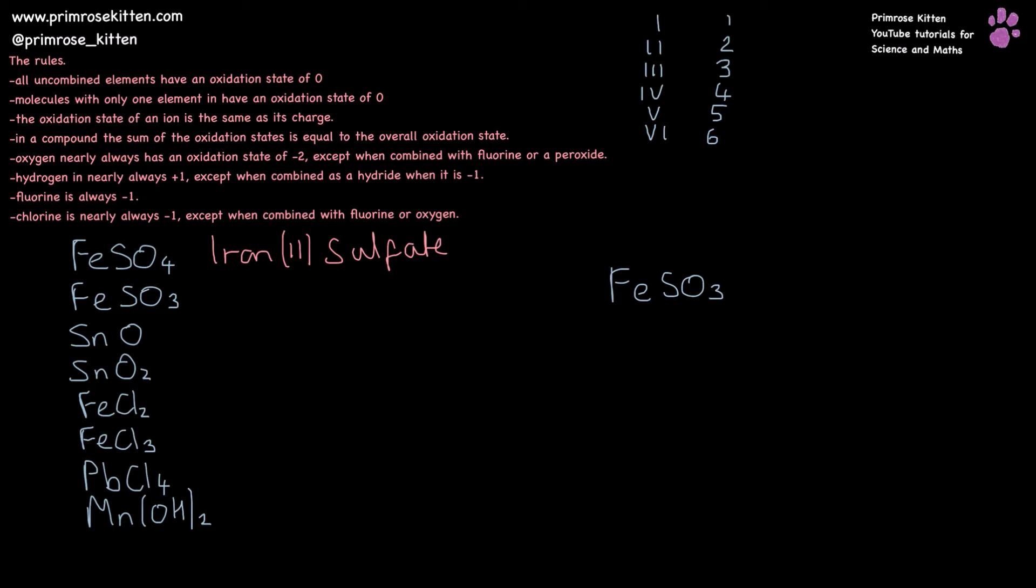Again, with the next one, we need to assign all our oxidation states. So oxygen is minus two and there are three of them, giving us an overall contribution of minus six. A sulfite ion has a minus two charge, which means sulfur in this circumstance is only contributing plus four and iron is still plus two, giving us iron(II) sulfite(IV).